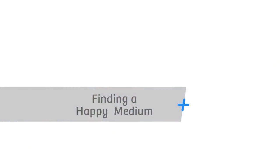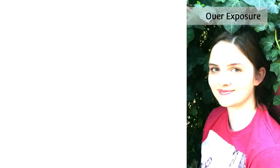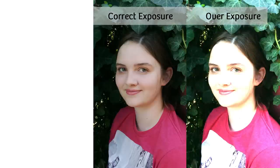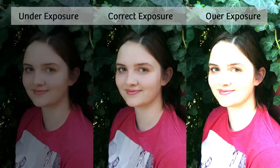Exposure in practical terms means how light or dark the photograph is, and it's always framed in this light: overexposure means too much light, correct exposure means average, and underexposure means a little dark — just like the pictures you're seeing here of my model.